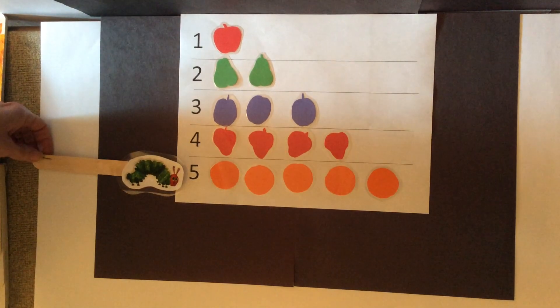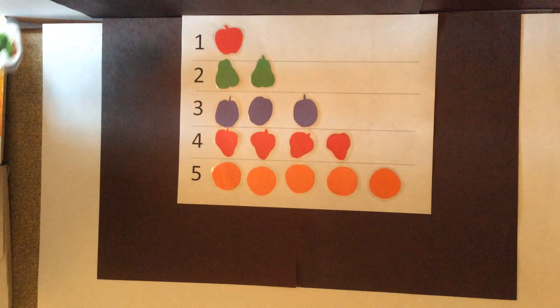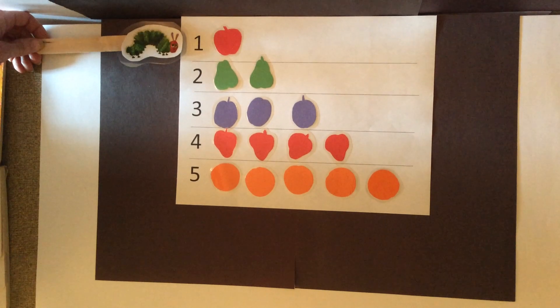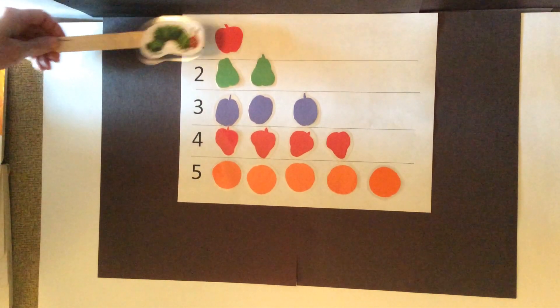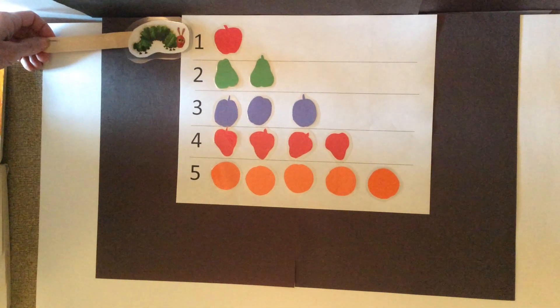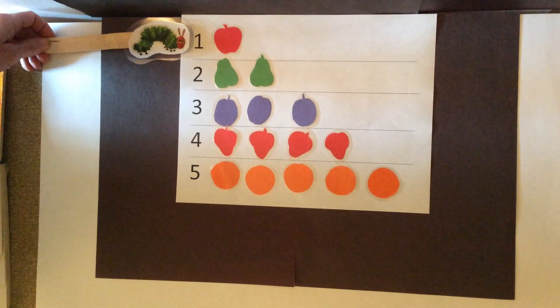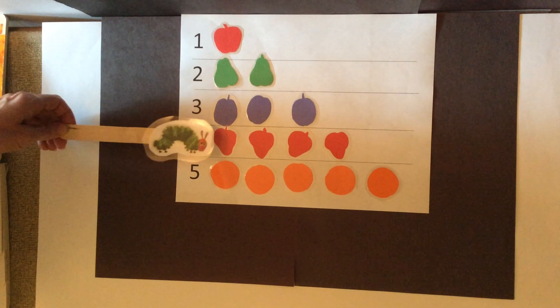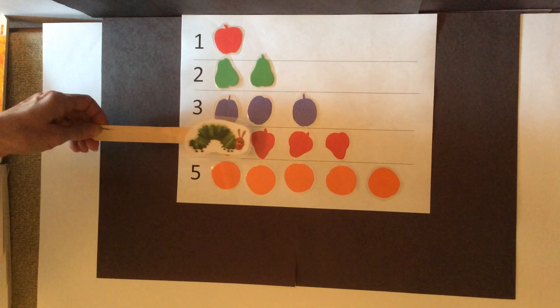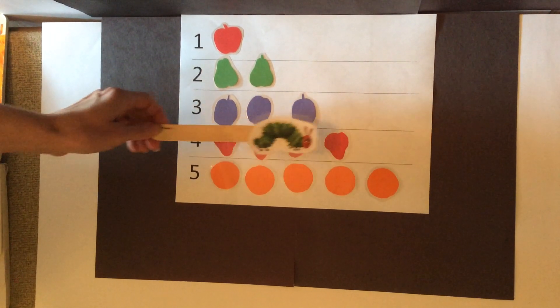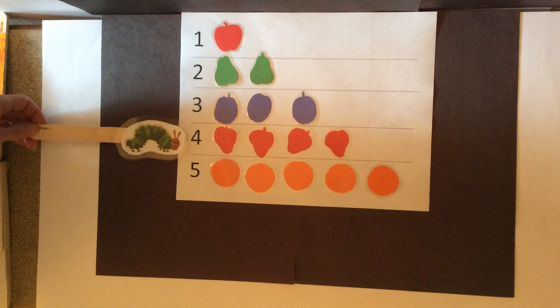Now let's practice counting our fruit again. How many apples did the caterpillar eat? One. That's number one. How many strawberries did the caterpillar eat? One, two, three, four. There's number four.